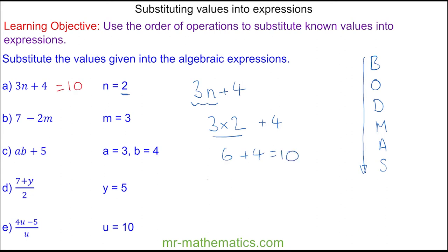Question b: we have 7 minus 2m. This means 7 minus 2 multiplied by m, and m is 3, so we'll substitute that in place of the m. 7 minus 2 times 3. We'll do the multiplication first because multiplication comes before subtraction.